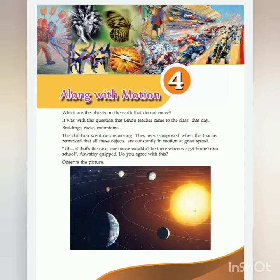Now here you can see a picture — this is the picture of a solar system. Here you can see the sun and eight planets. Together, the sun and eight planets are known as the solar system. We know that all the planets in the solar system move around the sun, so Earth is also a planet that moves around the sun.